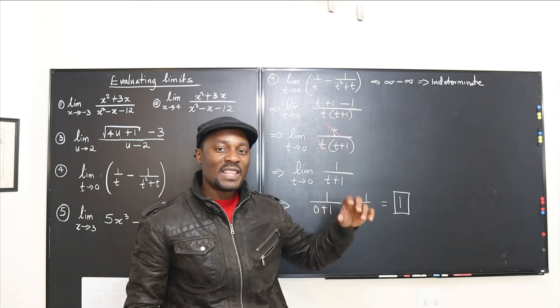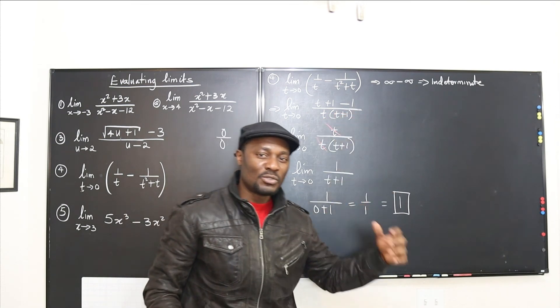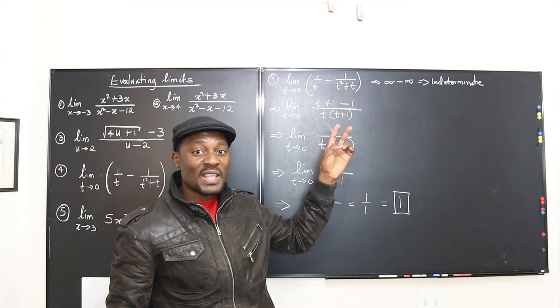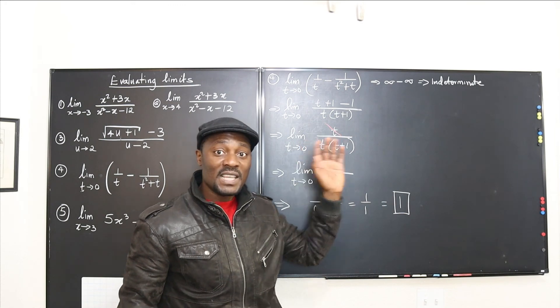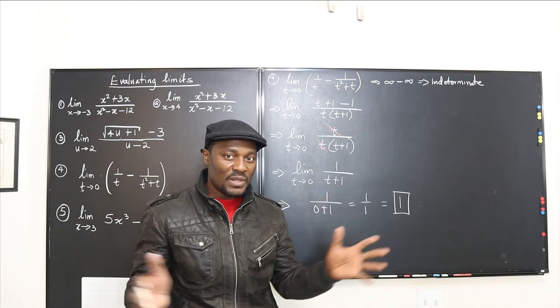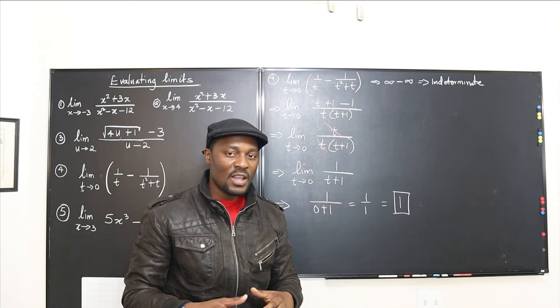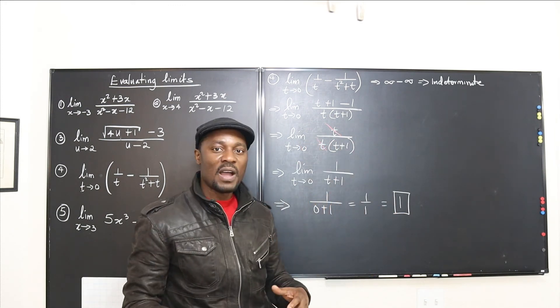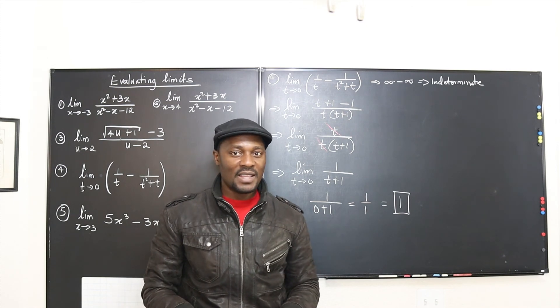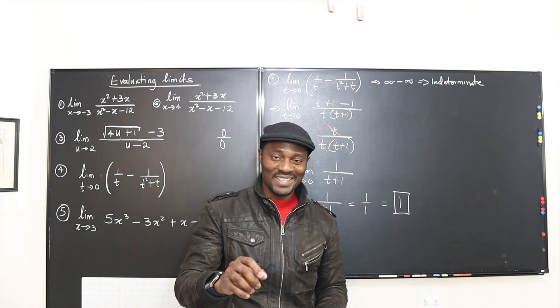So whenever you have subtraction of two terms that give you infinity minus infinity, remember: put the two terms together, find a single rational expression, and life will be beautiful.